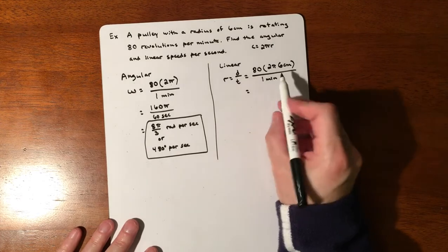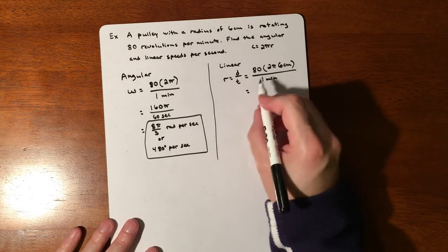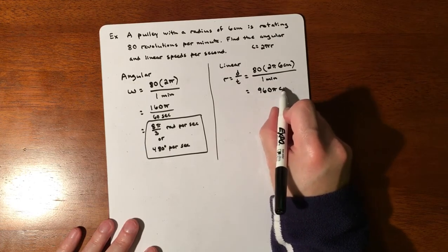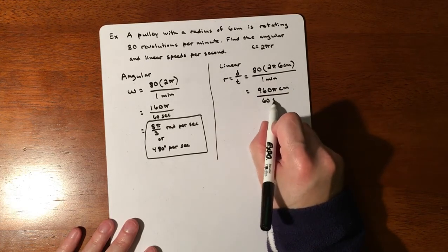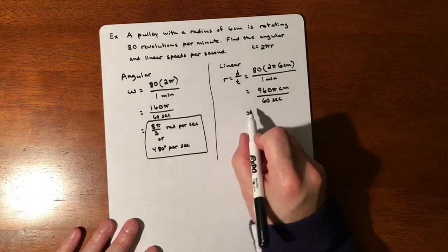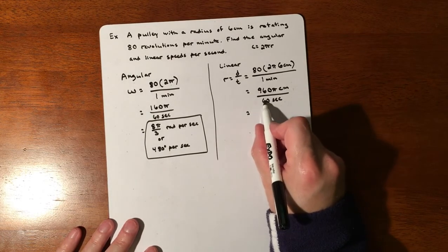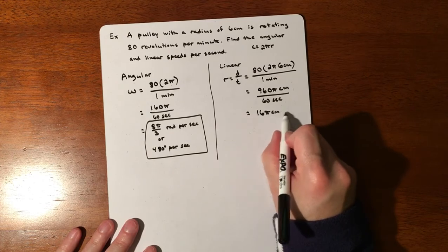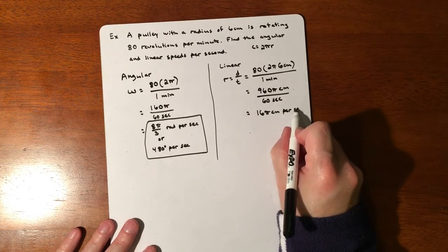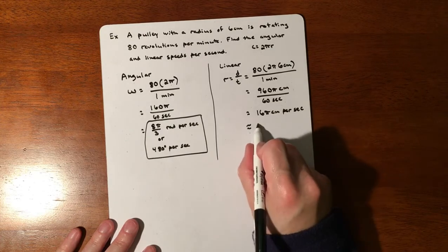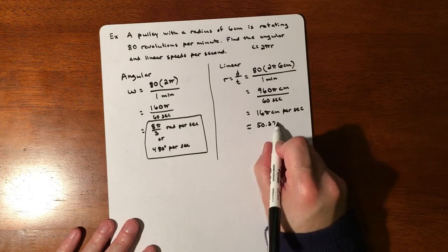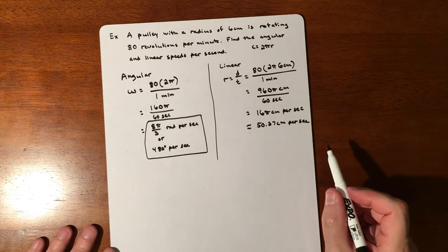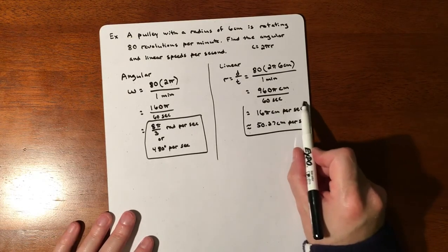This is going to be 12 times 8 is 96 with the zero tacked on, so 960π centimeters in 60 seconds. The zero wipes away, 6 goes into 96 and gets you 16π centimeters per second, which is roughly 50.27 centimeters per second.